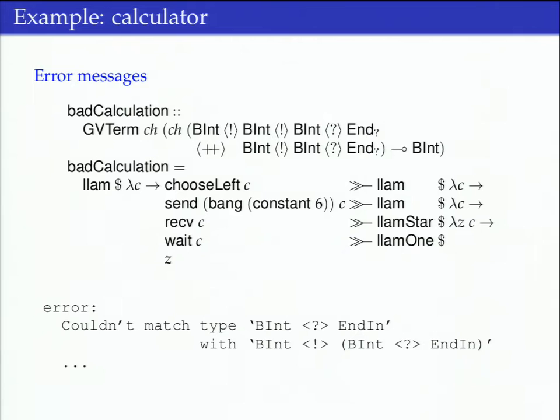A nice thing about our embedding is if we forget to send one of the integers, so I only sent one, then we get an error message that essentially says this at the top, and then there's loads of rubbish underneath but you can ignore the rubbish. This is pretty much exactly what you'd expect. It's saying that the type it found was expecting a single integer, but the specified type said we needed to supply two.